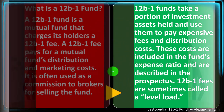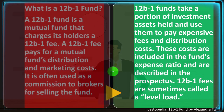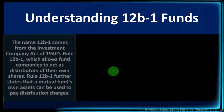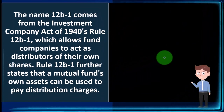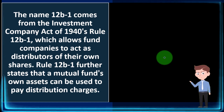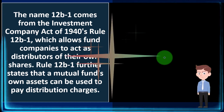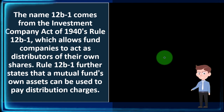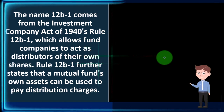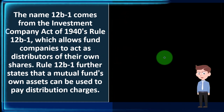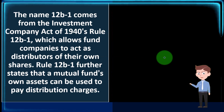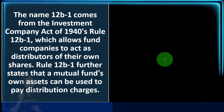The 12B1 fees are sometimes called level load — so level load is another term for the 12B1. The name 12B1 comes from the Investment Company Act of 1940's Rule 12B1, which allows fund companies to act as distributors of their own shares. Rule 12B1 further states that a mutual fund's own assets can be used to pay distribution charges.